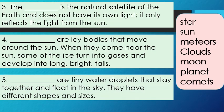Number 5: Blank are tiny water droplets that stay together and float in the sky. They have different shapes and sizes.